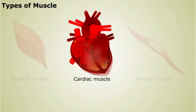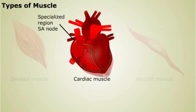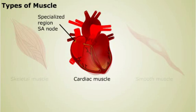Cardiac muscle is a striated muscle and is similar to skeletal muscle. The main difference is that cardiac muscle cells have specialized regions that spread the nerve signal from cell to cell. This allows one signal to cause the entire heart to contract.